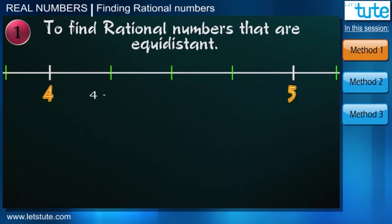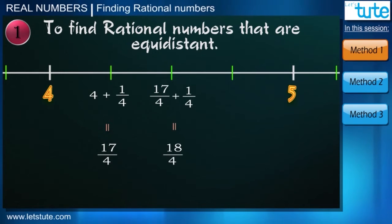First number is 4 plus 1 by 4, that is 17 upon 4. Then we add 1 by 4 in each preceding number and can get 18 by 4 and 19 by 4 as the three rational numbers between 4 and 5.